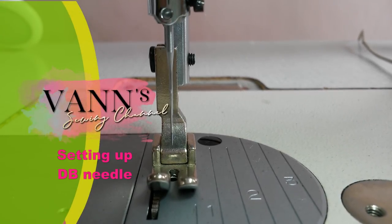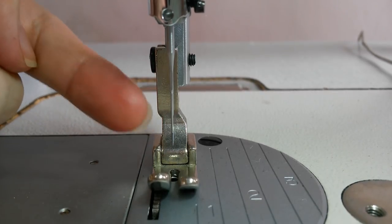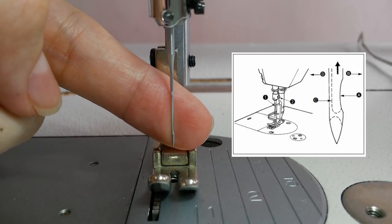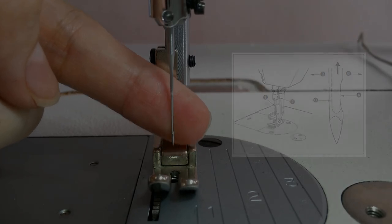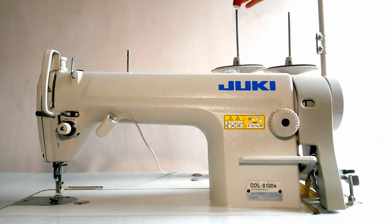Done with the bobbin. Now we need to set up the DB needle. The needle's curved line should always face the right side, like this picture. And finally, we come to the main part: threading.